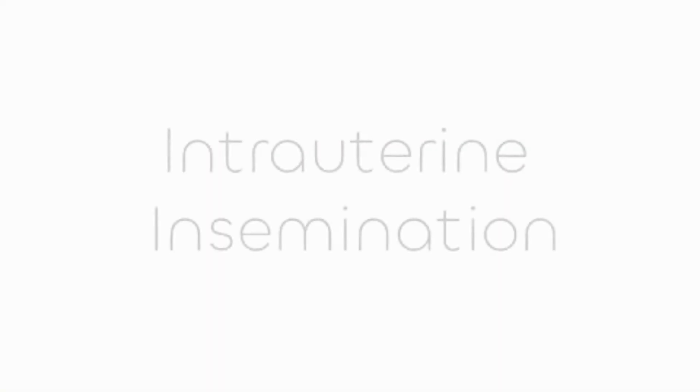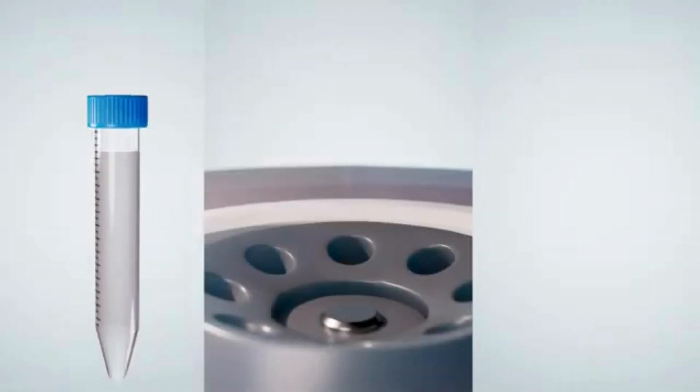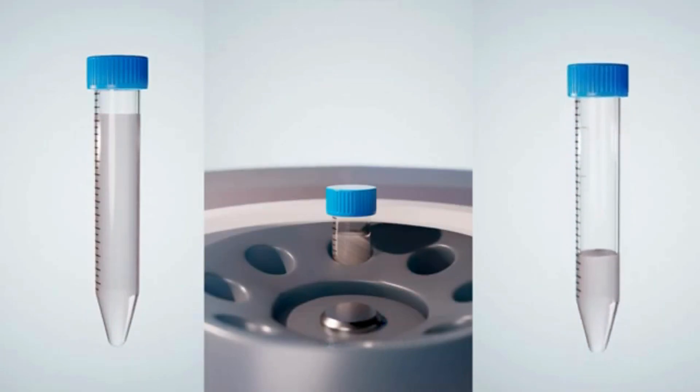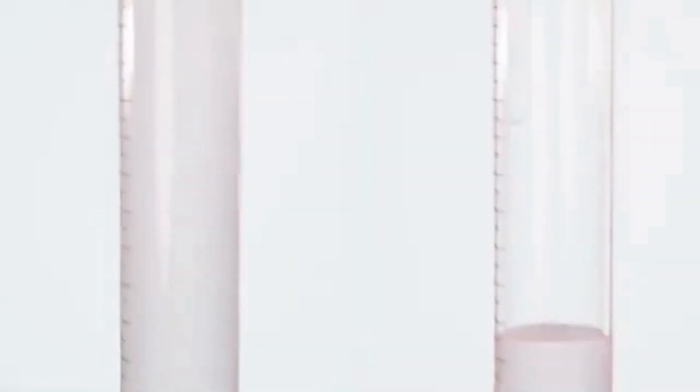IUI, or intrauterine insemination, is timed around ovulation. A fresh or frozen sample of sperm from a partner or donor is processed, being centrifuged, washed, and then concentrated. This greatly improves the chances of fertilization, as the post-wash sample has a higher concentration of live and active sperm.